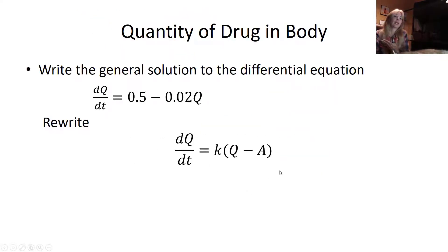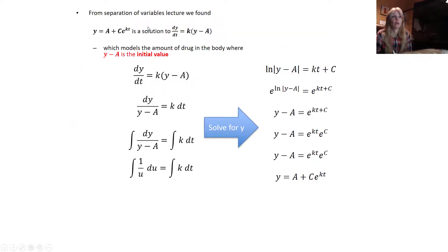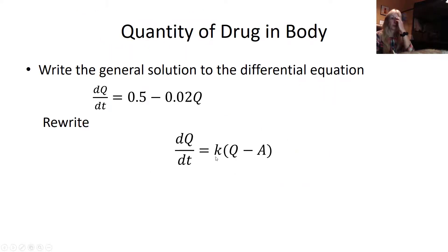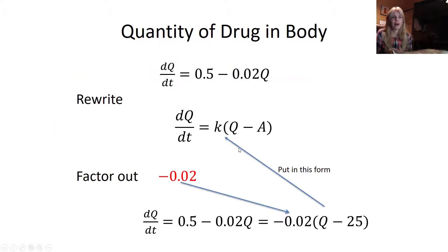This part's going to seem a little different, because I want to rewrite this to look exactly like K times Y minus A. If I do, then I'll be able to write exactly my solution. That's pretty easy to do, because all I have to do is factor out this constant of proportionality, the negative 0.02. You're dividing each term by negative 0.02, and I put the Q first to put it in this form.